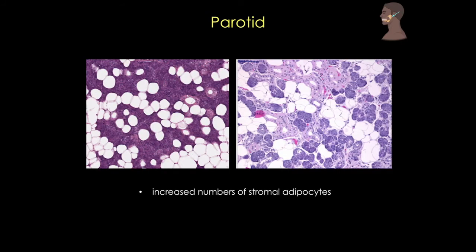The first and probably easiest feature to look for is fat, or adipocytes. The pancreas and parotid gland differ in the amount of stromal fat, with adipocytes much more common in the stroma of the parotid, but fairly rare in the pancreas.